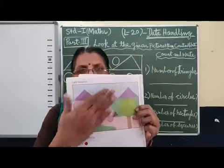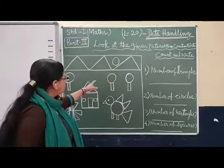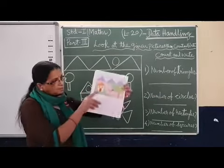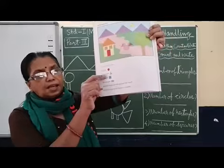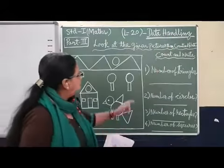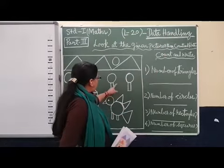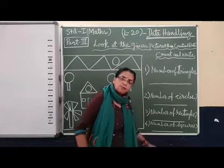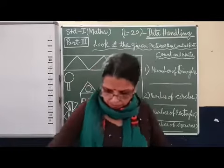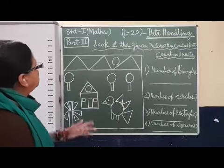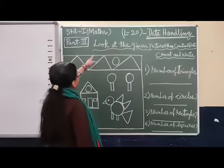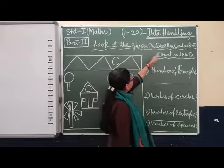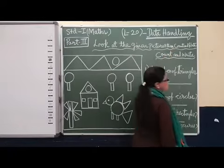Based on this, I have also drawn some picture here and some counting exercises they have given here. According to that, we have to see this picture and we have to count the number of shapes and we have to write the answer. So let us start. What is given? Look at the given picture, then count and write.